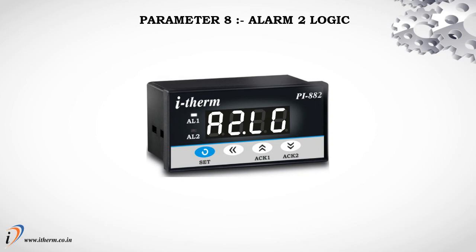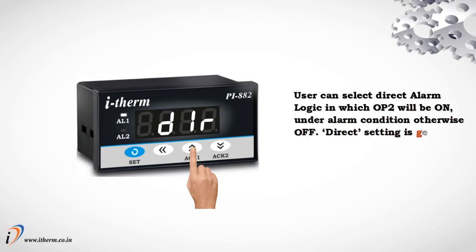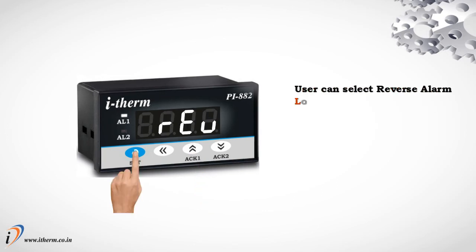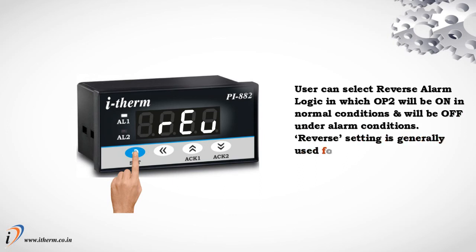Parameter 8: Alarm 2 Logic. The user can select Direct alarm logic, in which output 2 will be ON under alarm condition, otherwise OFF — generally used for audio or visual alarm output. Or Reverse alarm logic, in which output 2 will be ON in normal conditions and OFF under alarm conditions — generally used for tripping the process under alarm condition.